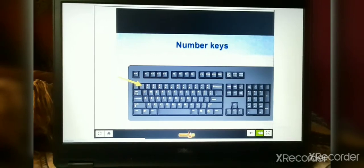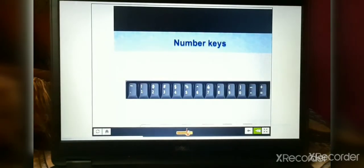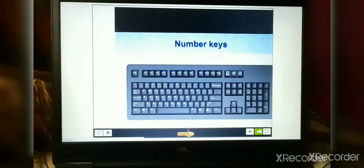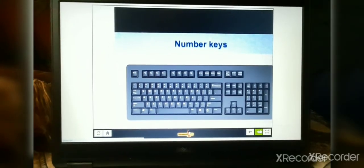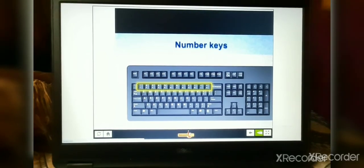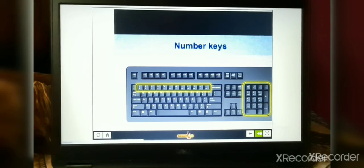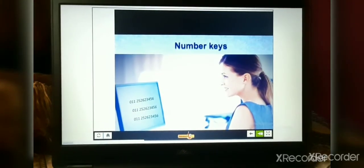The keys labelled 0 to 9 are called number keys. These keys are used to type numbers on the computer. There are two sets of number keys present on the keyboard. The first set is placed above the alphabet keys and the second set is present on the right side of the keyboard. For example, we can type our phone number using number keys.